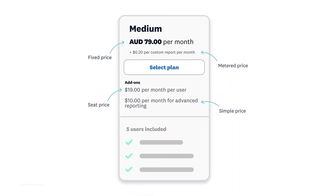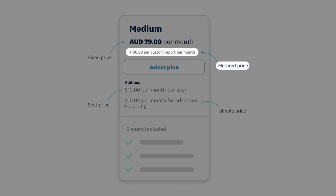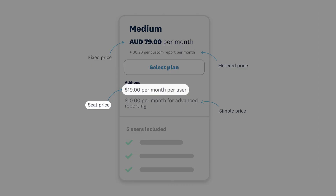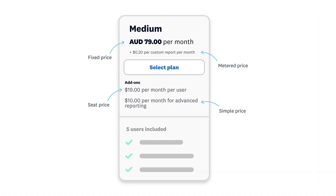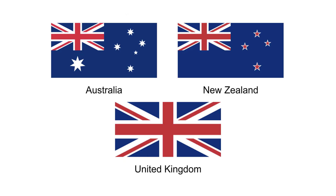Apps will offer an array of different pricing combinations. The pricing models that Xero App Store subscriptions can currently support are: monthly subscriptions with fixed, metered, per seat, and simple — also known as add-on — pricing. These pricing models will be covered in more detail in the following videos. Xero App Store subscriptions is currently available for customers based in Australia, New Zealand, or the United Kingdom — we're working hard to add to this, so keep your eyes open.